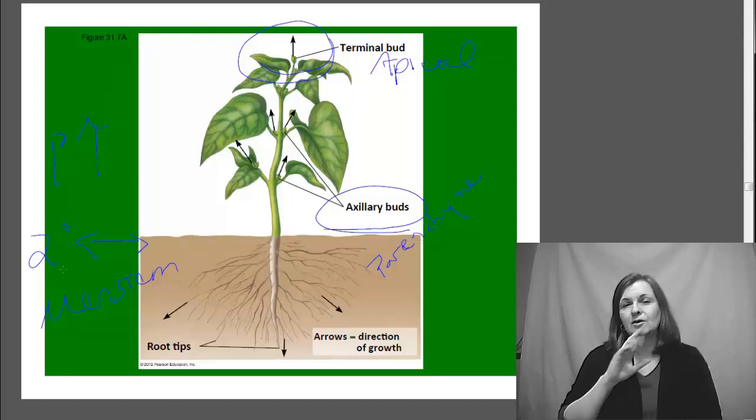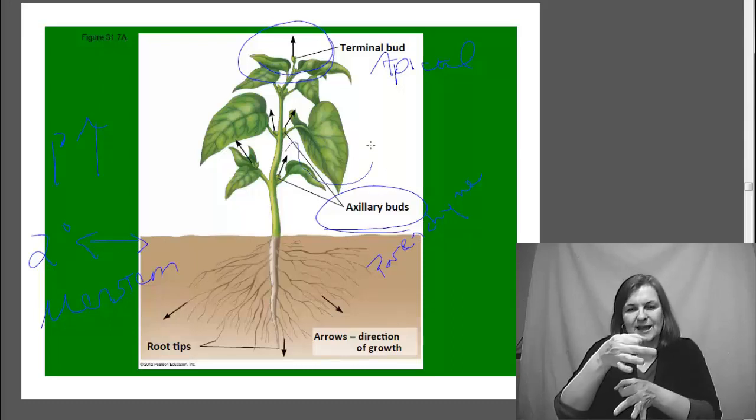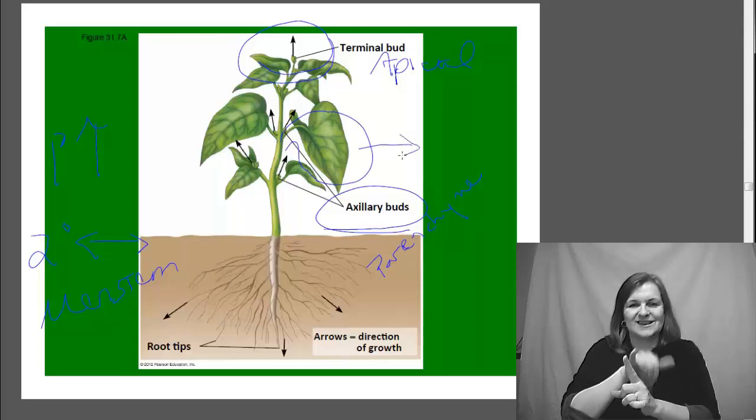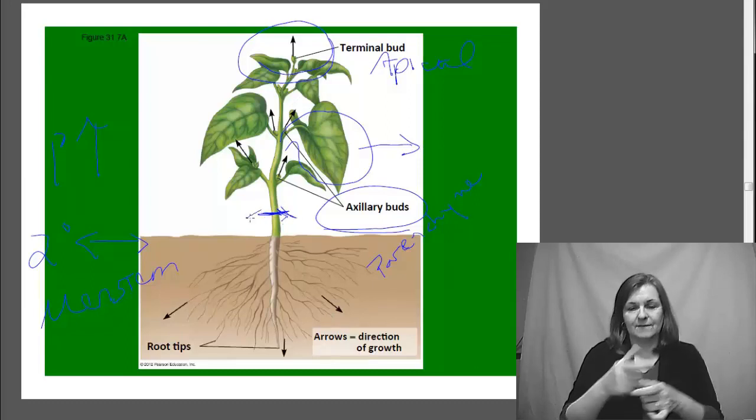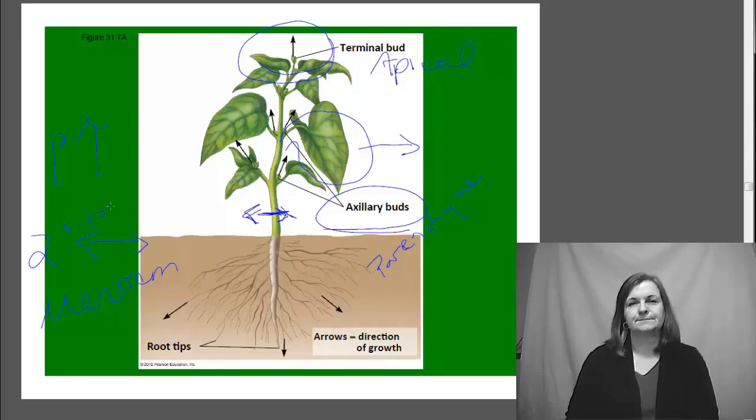Now, when I say secondary growth is wider, don't think about this production of a leaf sticking out to the side of the plant as being wider. When we talk about width of growth secondary, we're actually just going to talk about the stem itself. And this is what we see primarily in trees.